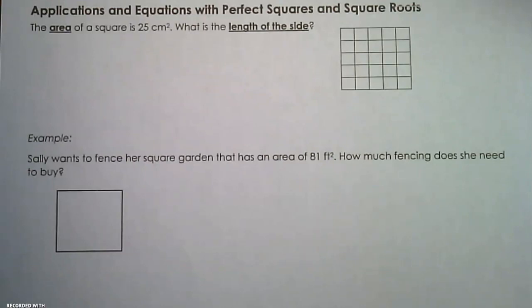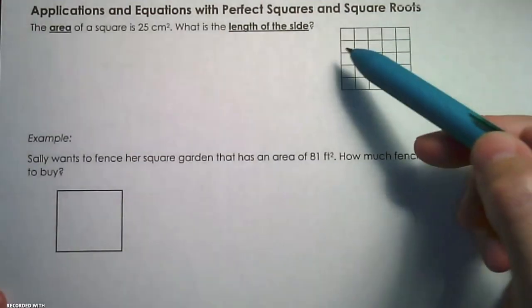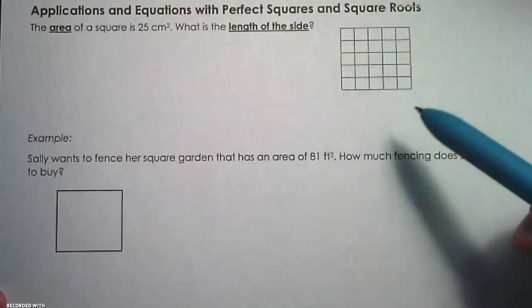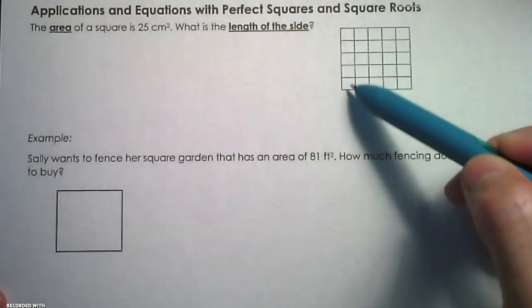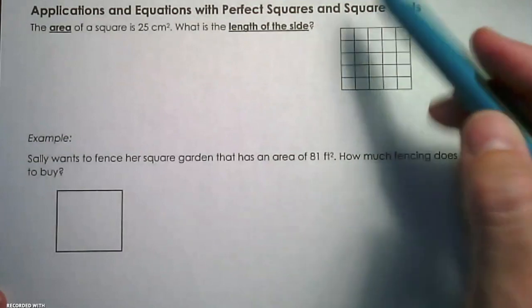Let's take a look at the first example. The area of a square is 25 square centimeters. What is the length of the side? If we look at this picture, we know that there's 25 square units that fill this space, and we're trying to figure out what one side length is. Well, we can count that side length.